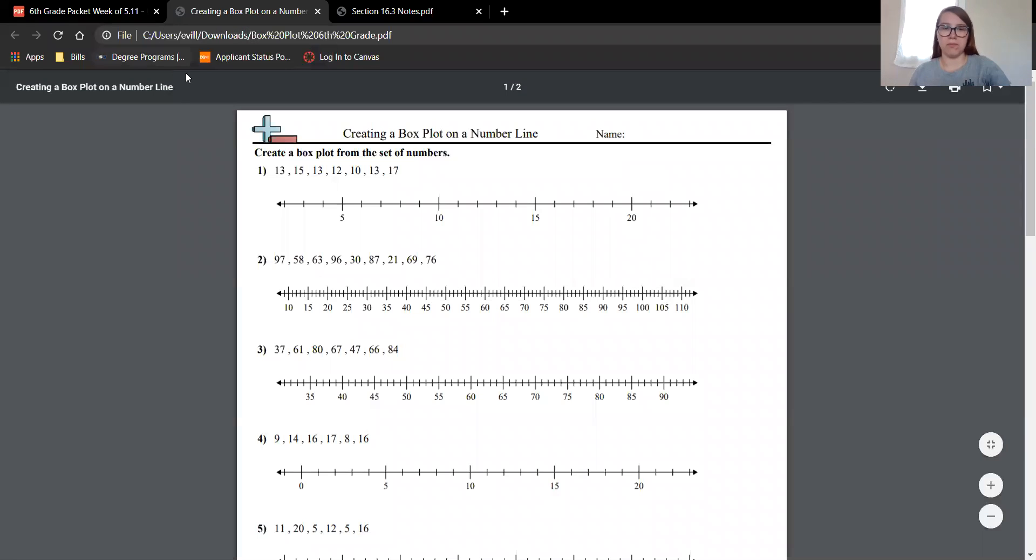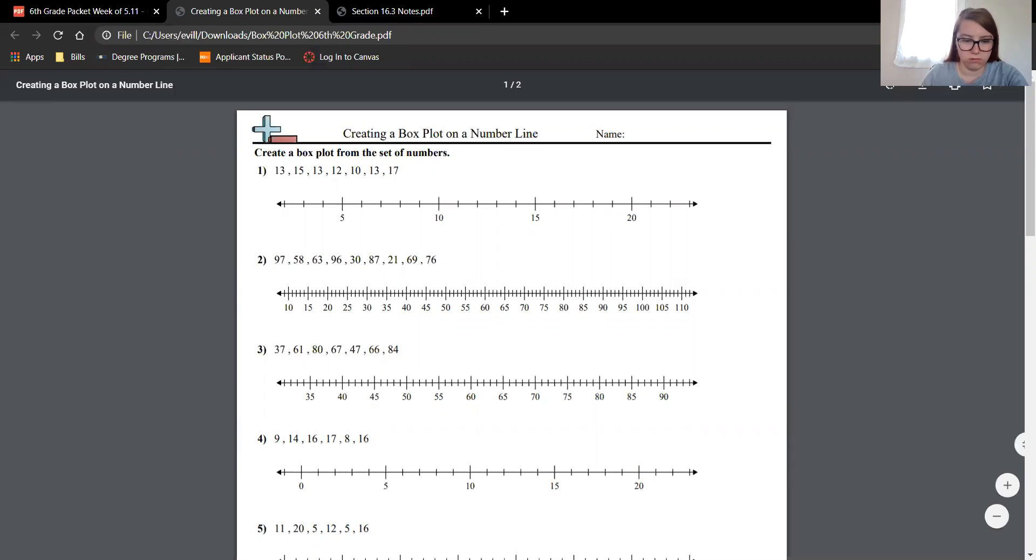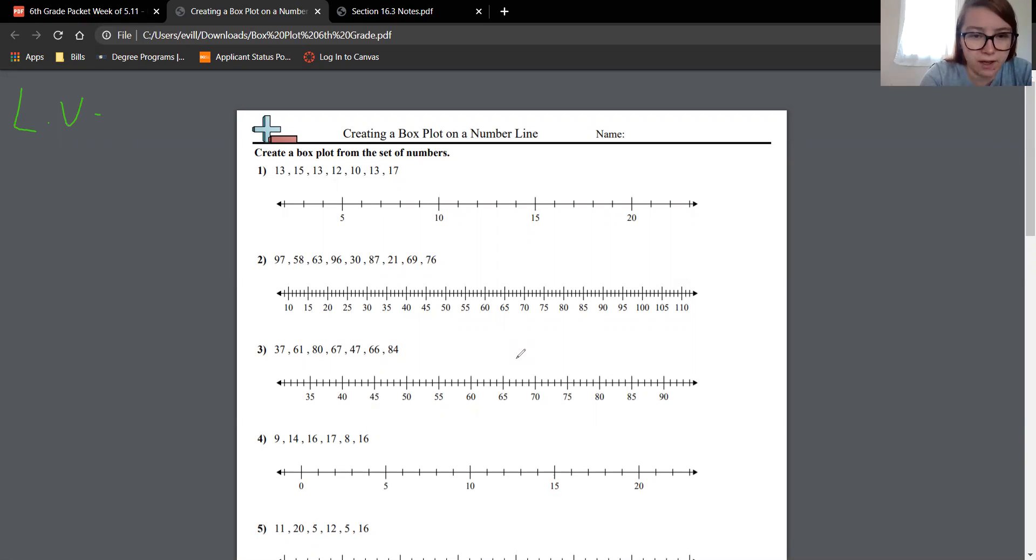So remember when you do a box plot, a number line, first you have to find the least value, the lower quartile, the median, the upper quartile, and the greatest value. So let me get my pencil. So least value in our data set. We should probably put these in order from least to greatest first before we worry about that. So we have 10 and then 12 and then one, two, three thirteenths. Then we have 15 and 17.